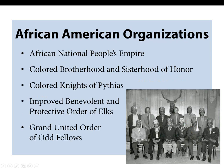When it comes to African-American organizations, because of the racism prevalent in the period, most were formed in the 1800s. Many times African-Americans had to create their own organizations, such as the Colored Knights of Pythias, the Improved Benevolent and Protective Order of Elks, the Grand United Order of Odd Fellows, the African National People's Empire, and the Colored Brotherhood and Sisterhood of Honor. So your ancestor as an African-American may have had to find his own organization because the one he tried to join was whites-only at the time. In present day, that's no longer an issue.